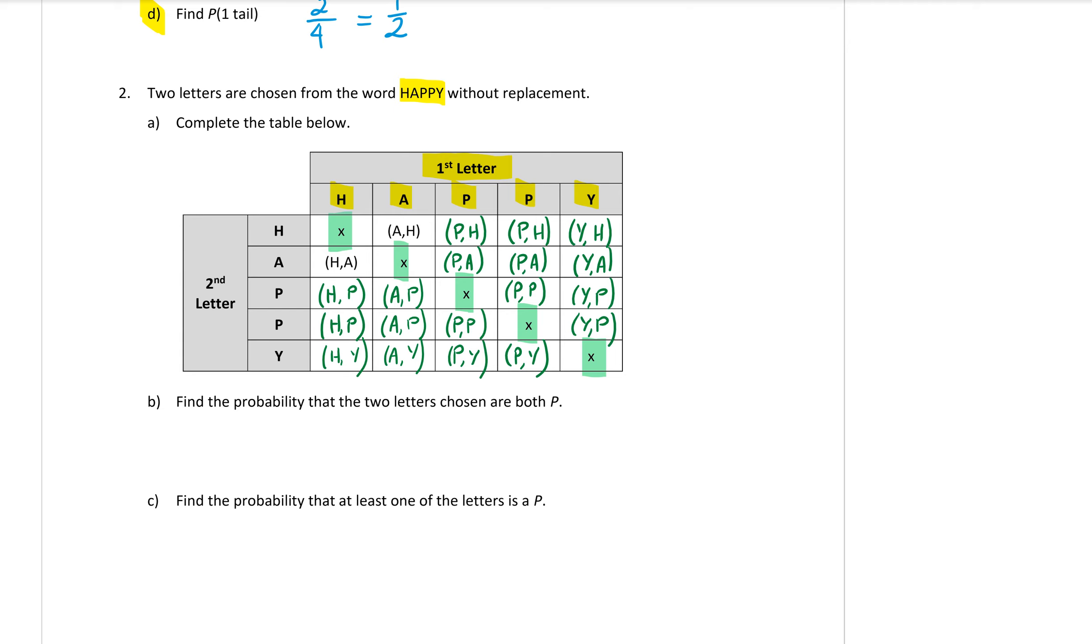Part b says find the probability that the two letters chosen are both P. So we look through our list, our outcomes in there, and we're looking for the ones that have P P in them. P P, P P. There's two of them.